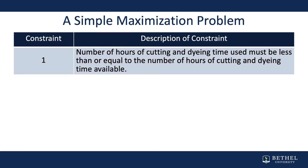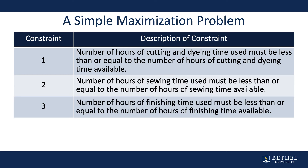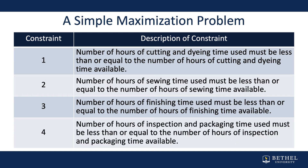Let's look at the constraints more closely. Constraint one: hours of cutting and dyeing time used must be less than or equal to hours available. Constraint two: hours of sewing time used must be less than or equal to hours available. Constraint three: hours of finishing time used must be less than or equal to hours available. Constraint four: hours of inspection and packaging time used must be less than or equal to hours available. You cannot exceed the capacity available for any process.